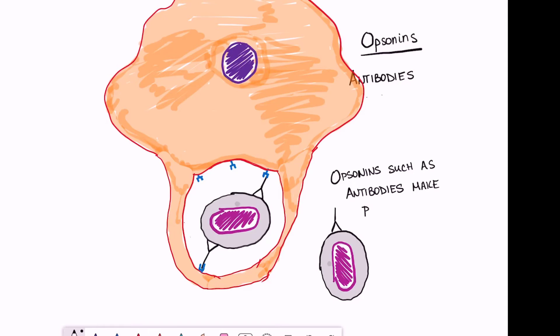In summary, opsonins such as antibodies are going to reduce the pathogenicity of an encapsulated bacterium.